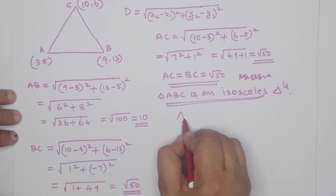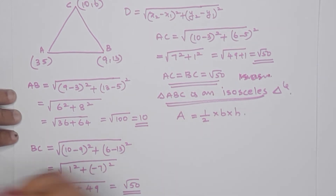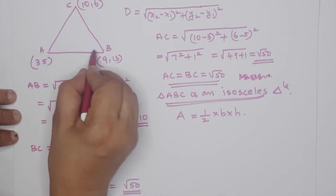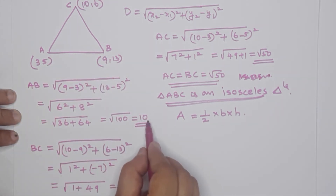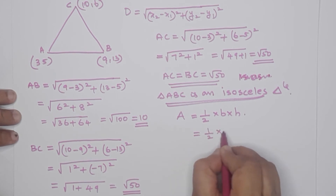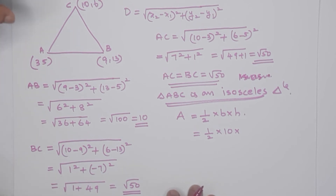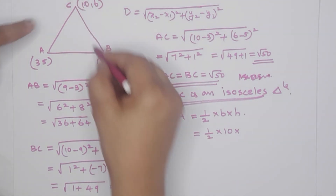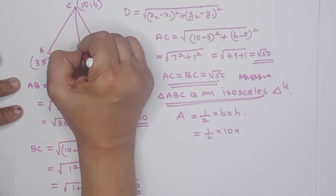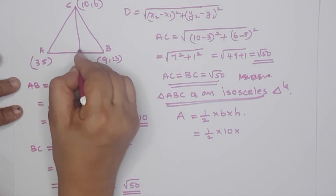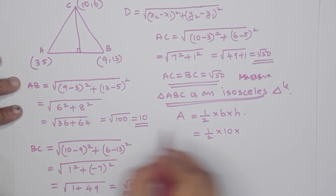Now let's calculate the area. Area equals half base into height. The base is AB which equals 10. For an isosceles triangle where AC equals BC, the altitude from C bisects AB at its midpoint M. We find midpoint M of AB, then calculate distance CM as the height.